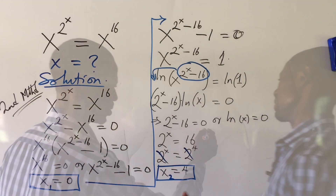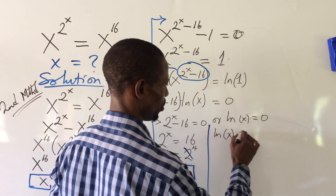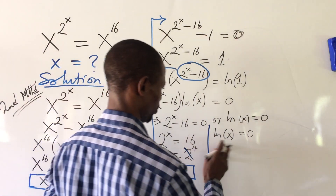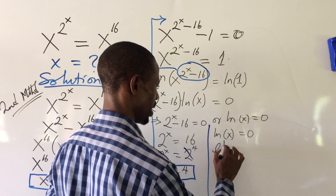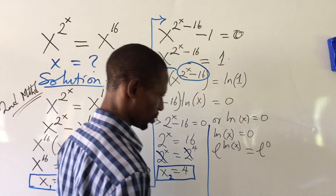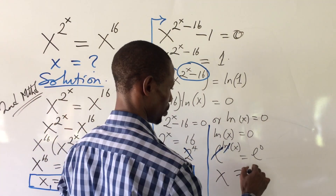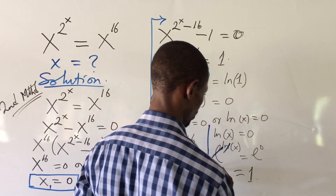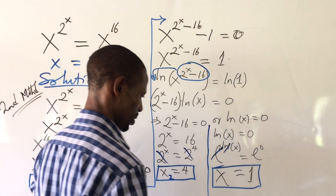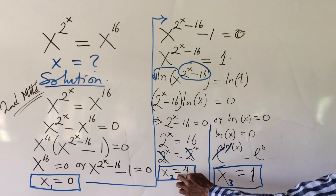Now for our third root, we solve ln(x) equal to zero. Raising e to both sides: e to the power of ln(x) equals e to the power of 0. The left side simplifies to x, and e to the power of 0 equals 1, so x equals 1. This is the third root. From our second method we found three roots: x = 0, x = 4, and x = 1.